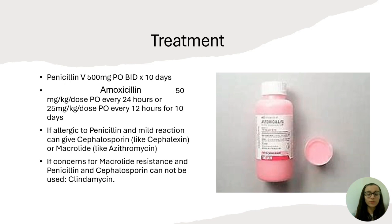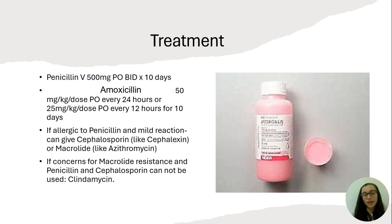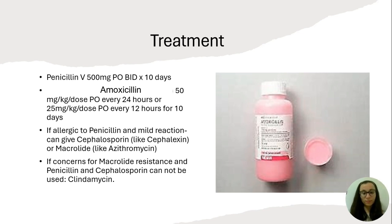In terms of treatment for strep, for adults we give penicillin V, 500 milligrams by mouth, twice a day for 10 days. For kids, amoxicillin is generally preferred because it tastes good and compliance is the number one priority — you want a kid to actually take the medicine at home. The dose is 50 milligrams per kilogram per day once daily, or divided every 12 hours at 25 milligrams per kilogram per dose. This is also done for 10 days. You always want to keep in mind the maximum daily dose allowed.